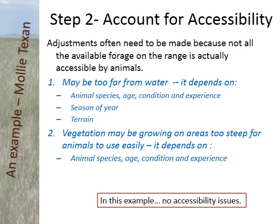Normally at this point we would make some adjustments for accessibility — making sure the forage is accessible to livestock on the ranch. Some parts of the ranch may be too far from water. This depends largely on the species of animal: sheep can travel further from water than cows or horses; younger animals can travel further from water and still forage effectively; animals in good condition and with experience on the ranch can also travel further. How far an animal can travel from water also depends on the season of year. In spring when vegetation is green and temperature is low, animals can travel much further than in hot summer when demand for water is high. Terrain matters too — in level country animals can travel further from water than in steep terrain. Generally, land within about a mile of water is considered accessible even to cattle.